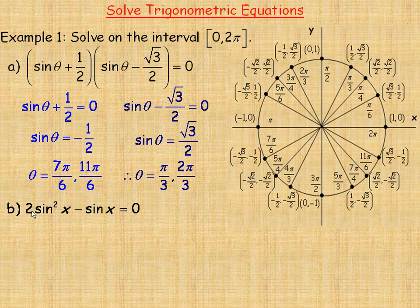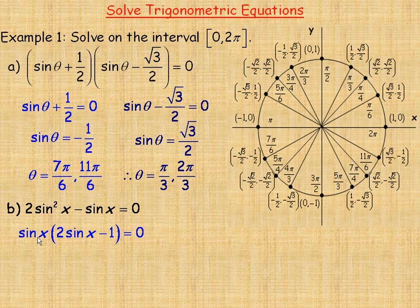In example B, we're given 2 sin²x − sin x = 0. It's not in factored form, so we need to factor it first. There's a common factor of sin x in both terms, so factoring sin x out: 2 sin²x divided by sin x gives 2 sin x, and factoring sin x out of negative sin x gives negative 1. So we get sin x(2 sin x − 1) = 0.